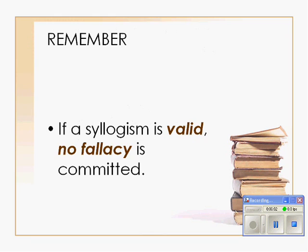If a syllogism is valid, no fallacy is committed. Again, we have three different ways of checking validity: we could look at the mood and figure, we could use the Venn diagram, and we could use these rules. Hopefully you'll try all three and make sure that your answers are consistent. If you find that a syllogism is valid, you should find that no fallacy is committed — that is, none of these rules are broken. Thank you for watching, and I will move on to the next video, which will be how to get rid of those pesky 'nots' in your syllogisms.